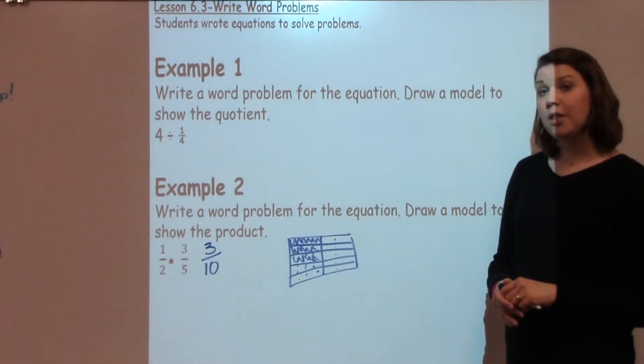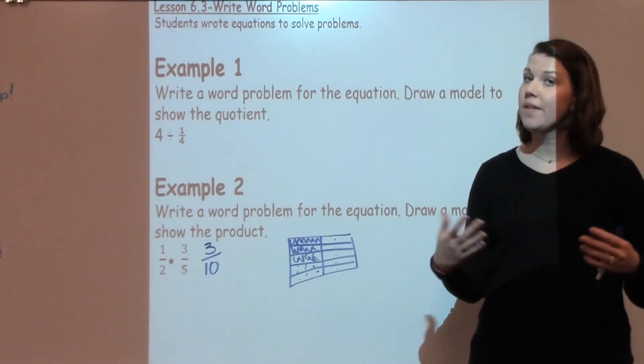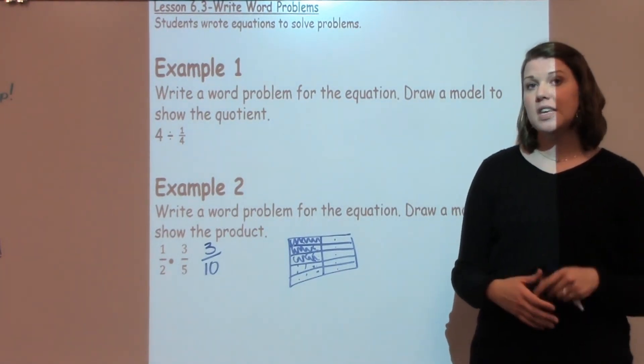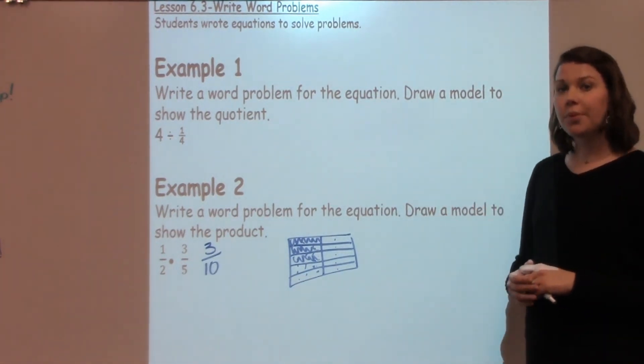Now, an appropriate example to go along with this might be that 1 half of a class likes pizza, 3 fifths of those students like pepperoni pizza. Just keeping in mind that when your student is making up a scenario that it's appropriate to use with fractions.